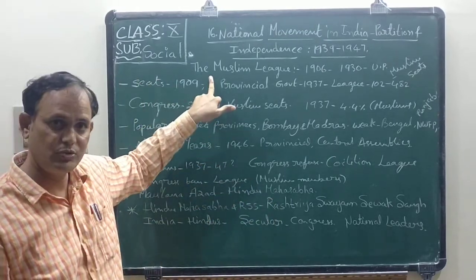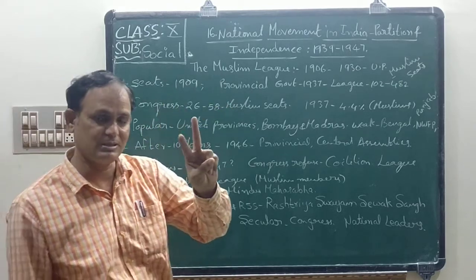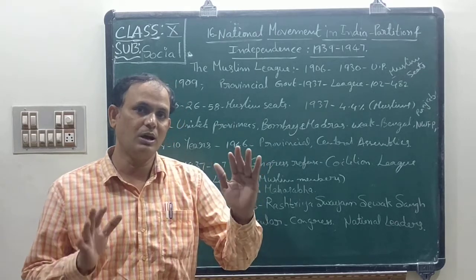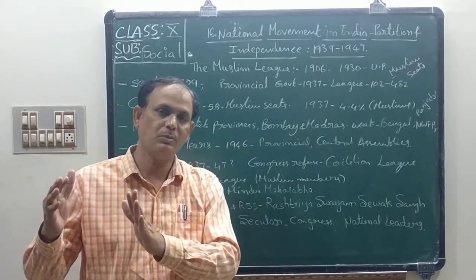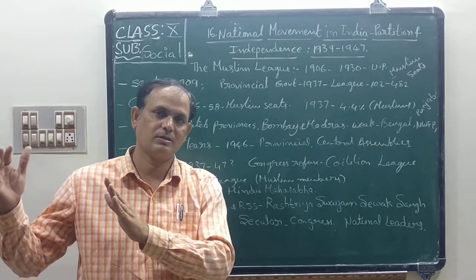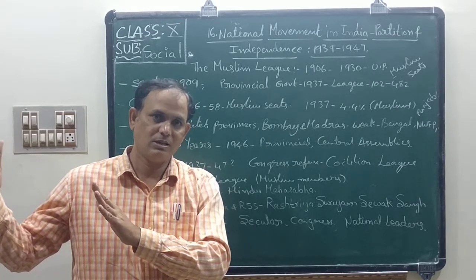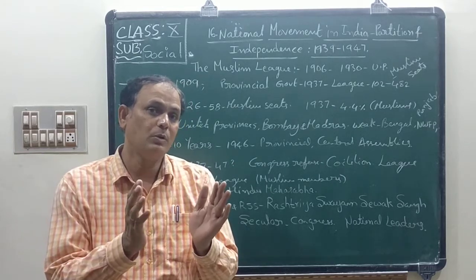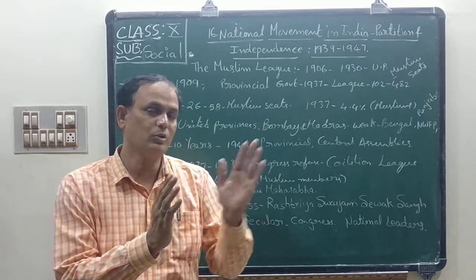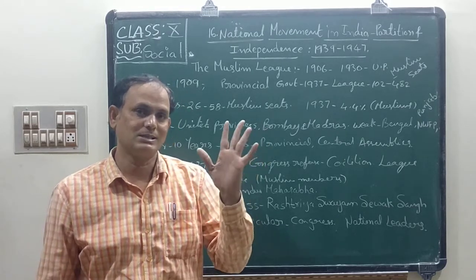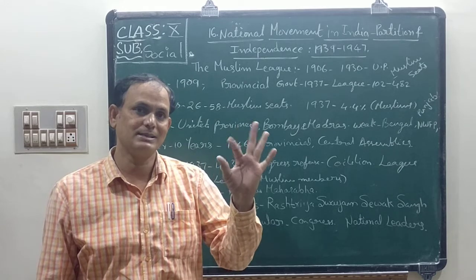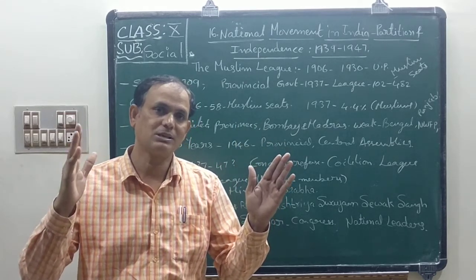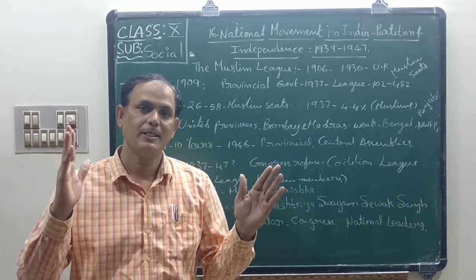Today I want to explain about two groups. In our country, majority people are Hindus, while minority people are Muslims, Christians, Buddhists, and others. The majority people formed one group called RSS. The minority people also started one group called Muslim League.